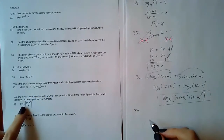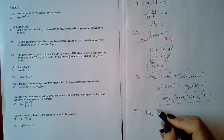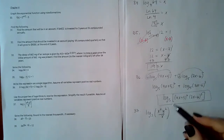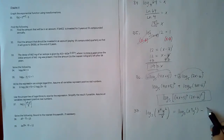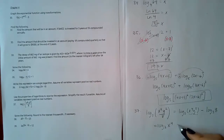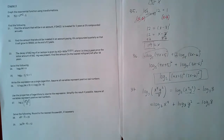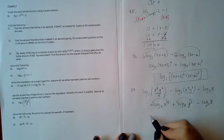Number 37: use properties of logarithms to expand log base 3 of (x to the fourth times y squared over 8). First, split the fraction: log base 3 of the numerator minus log base 3 of the denominator. Then split the product in the numerator: log base 3 of x to the fourth plus log base 3 of y squared, minus log base 3 of 8. Finally, bring the exponents to the front as coefficients: 4 log base 3 of x plus 2 log base 3 of y minus log base 3 of 8.